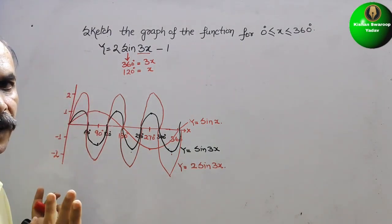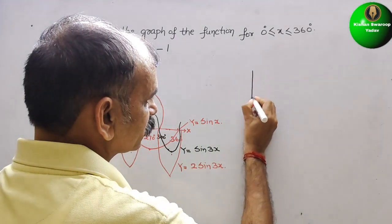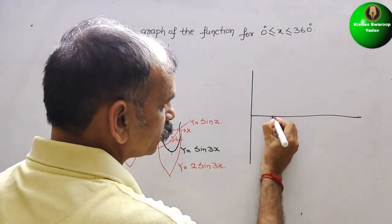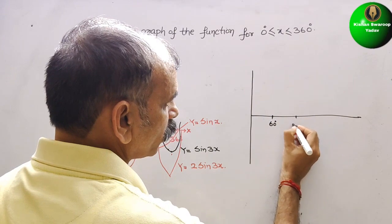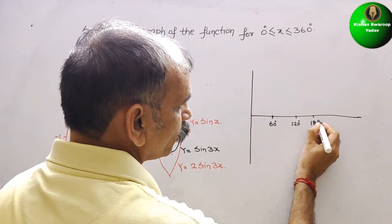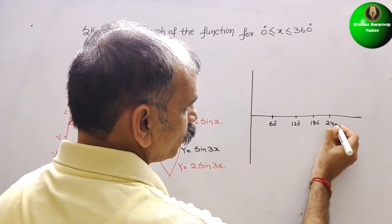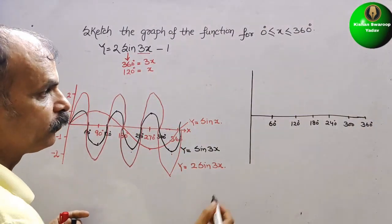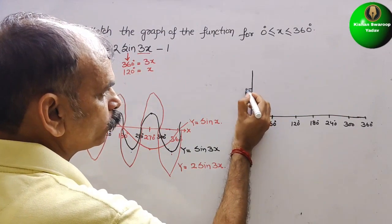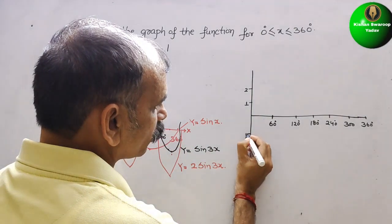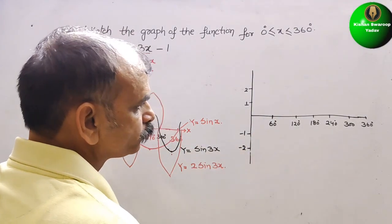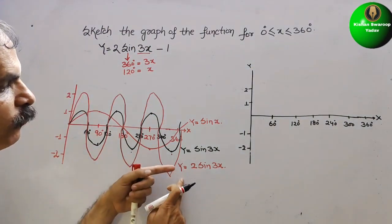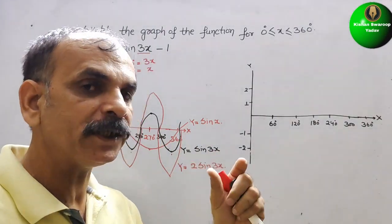Now we draw the final graph. The x-axis is marked at 60°, 120°, 180°, 240°, 300°, and 360°. The y-axis shows values 2, 1, -1, -2. We also need to shift the graph down by 1 in the y-coordinate — that is, subtract 1 from the entire function.